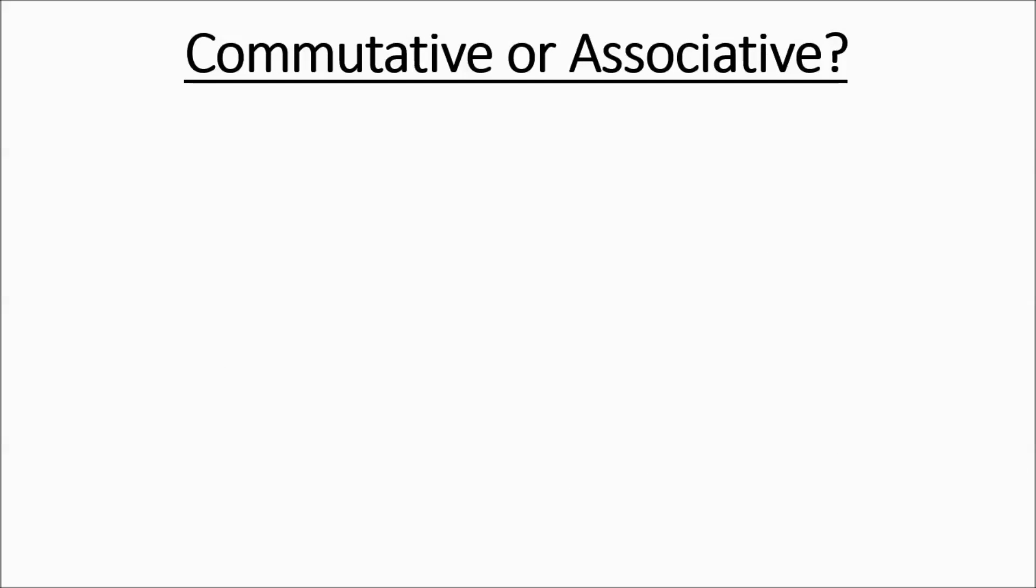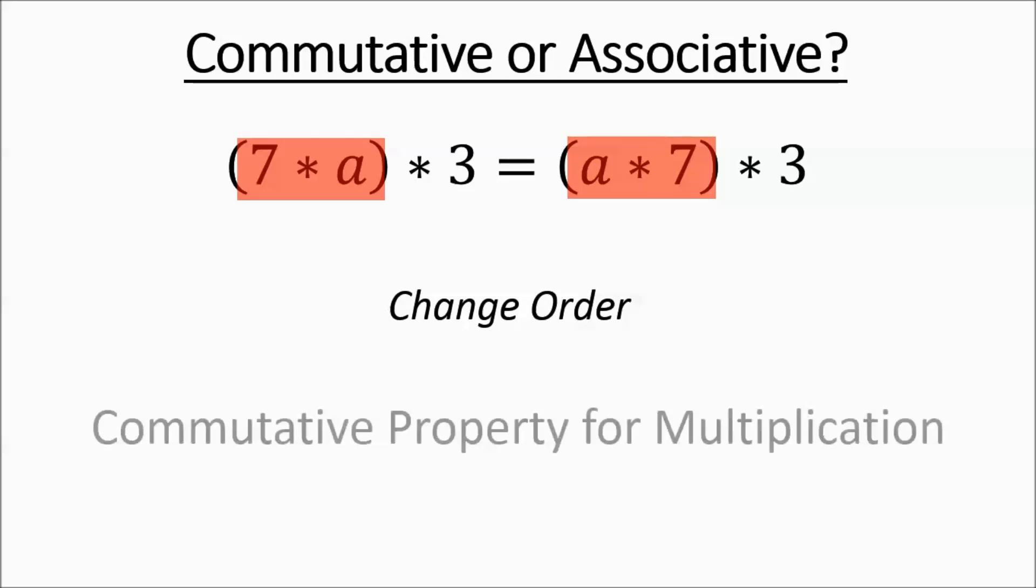So now we're just going to do some review. Is it commutative or associative? You can pause it and talk about it. If you have 7 times A times 3, A times 7 times 3. It almost looks like it would be associative because you have three terms and you have parentheses. But if you notice, the A and 7 are together. They're still grouped the same. So it's not a change in grouping. It's a change in order. And it's going to be commutative property for multiplying.